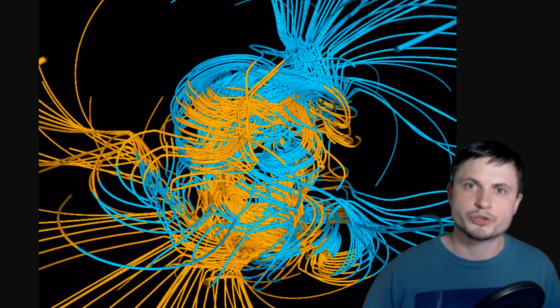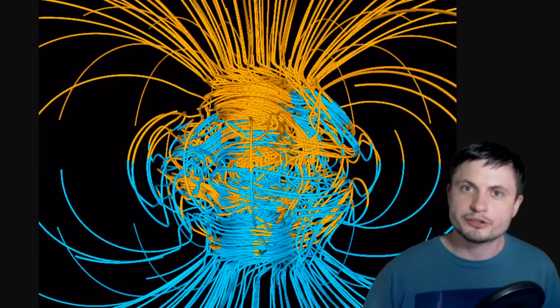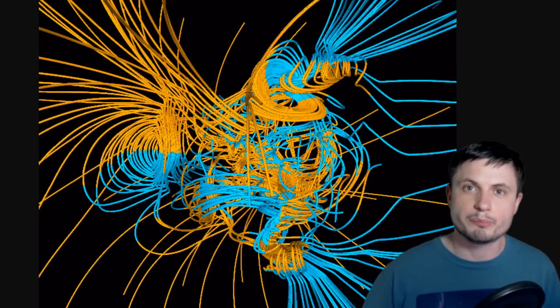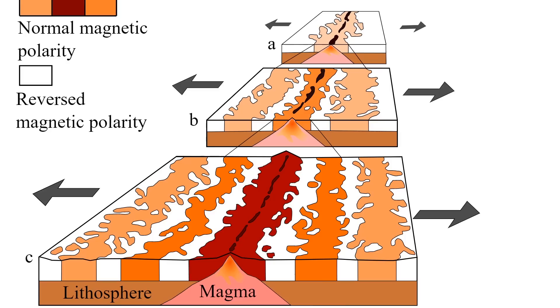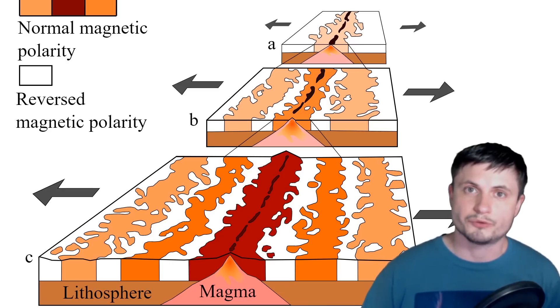Now, the reason we know that these reversals happened is actually because of all of the different deposits around the planet, like, for example, the deposits on the seafloor. And since we know that in the ocean, the tectonic plates slowly move apart from each other, by looking at the magnetic stripes right here, we can actually see that sometimes it's similar to what we have today, but sometimes it's completely reversed. And this is also something that's visible in a lot of other deposits around the planet. So we know that this is something that happens for a fact.